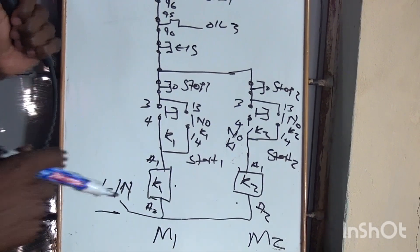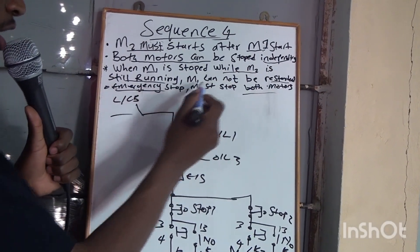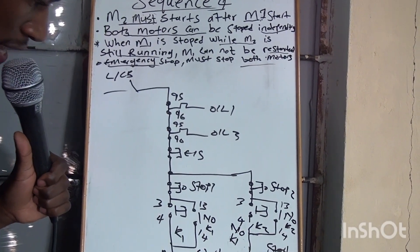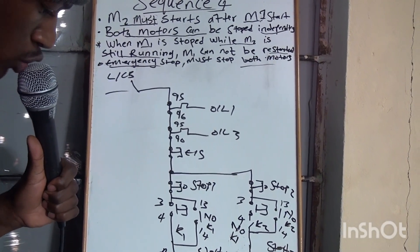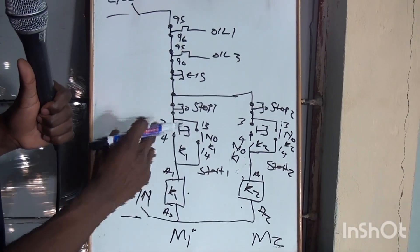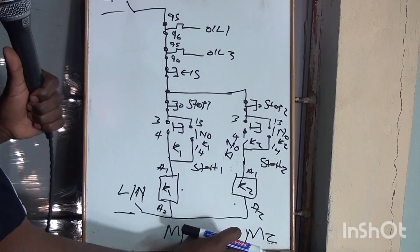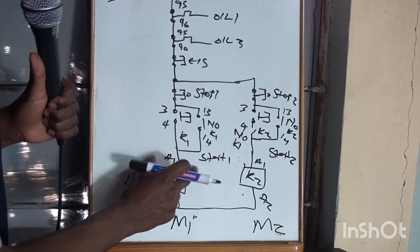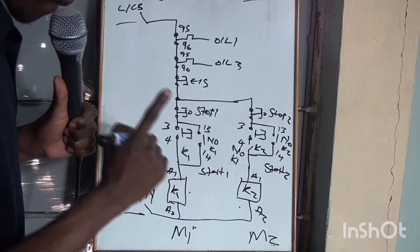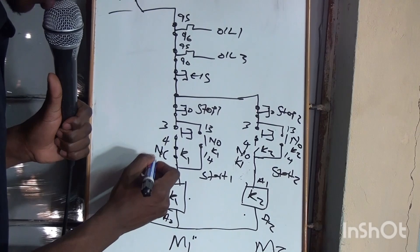Here's the third condition: when Motor 1 is stopped while Motor 2 is still running, Motor 1 cannot be restarted. So when both motors are running you must not be able to restart Motor 1 once you stop it. To achieve this, we are going to introduce a normally closed contact of K2 on the Motor 1 side.